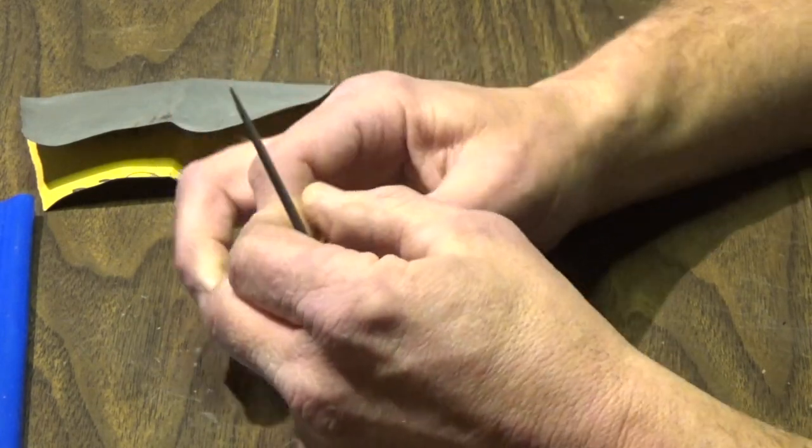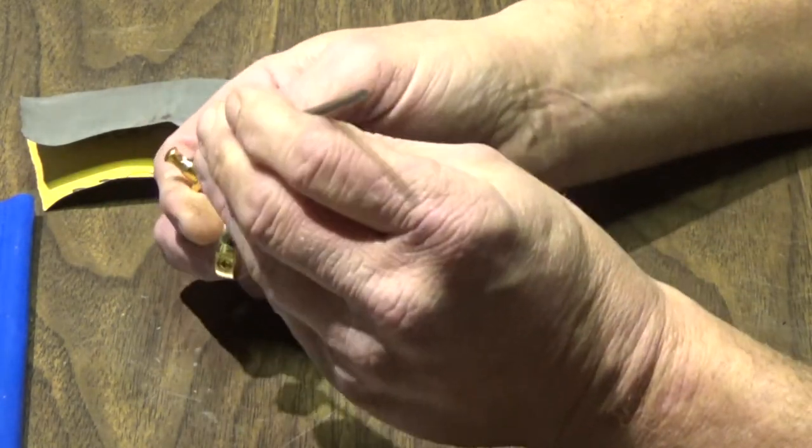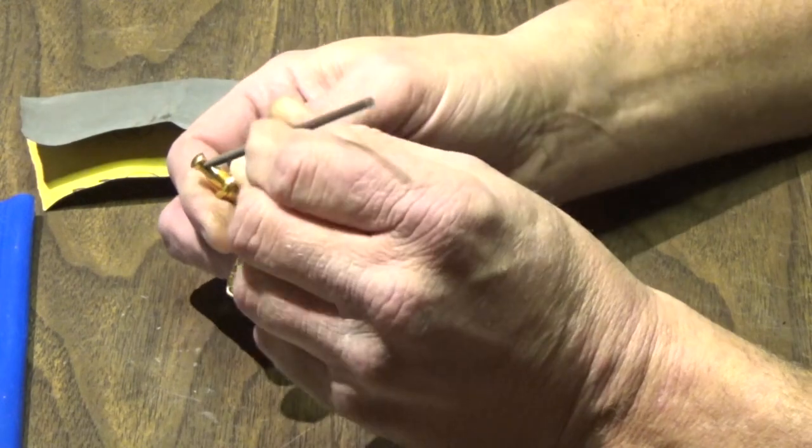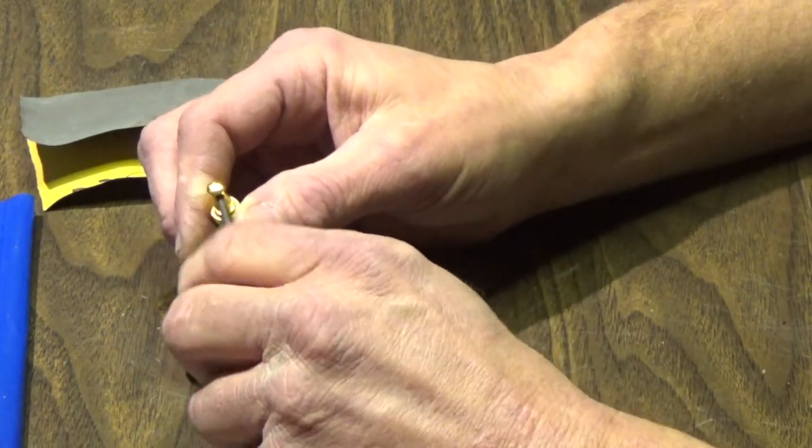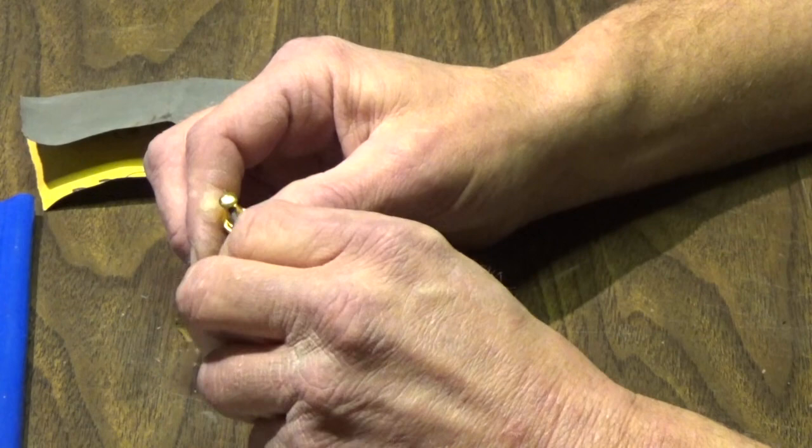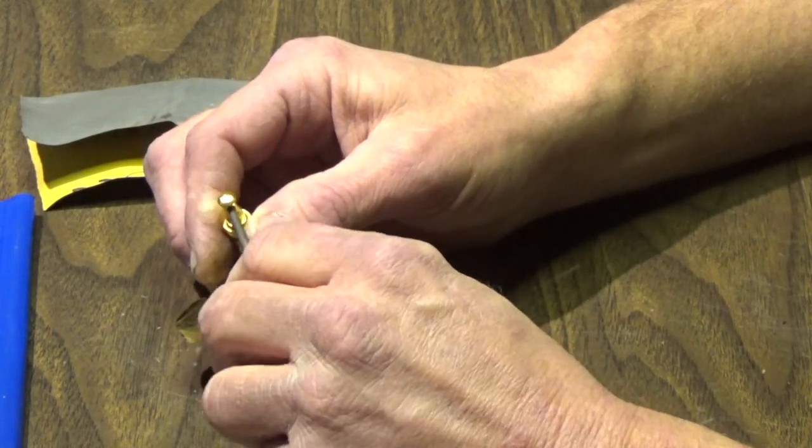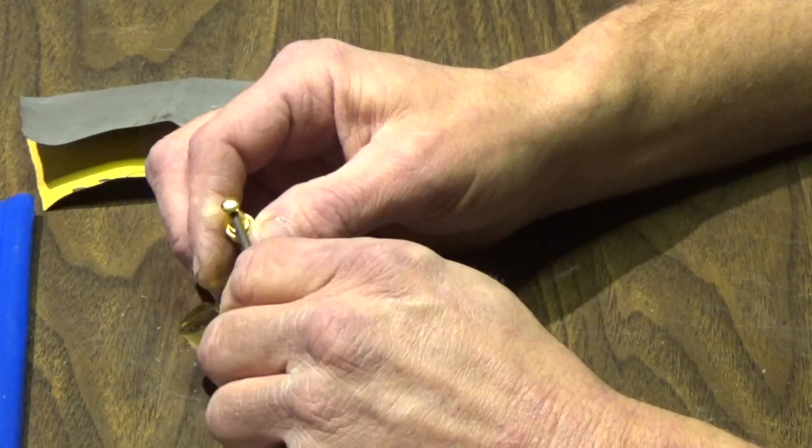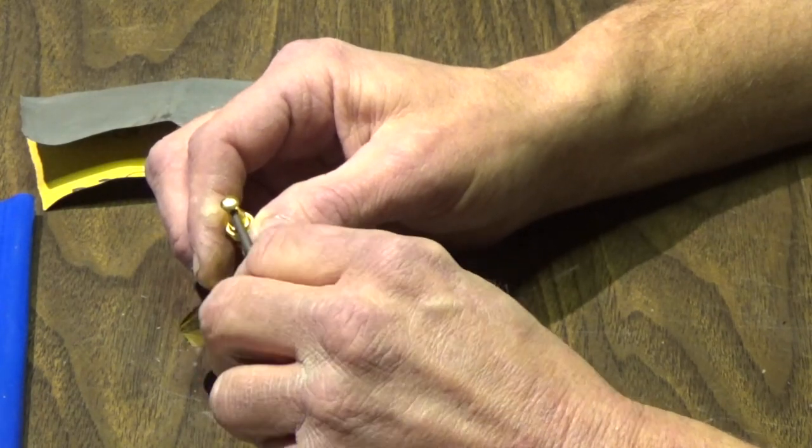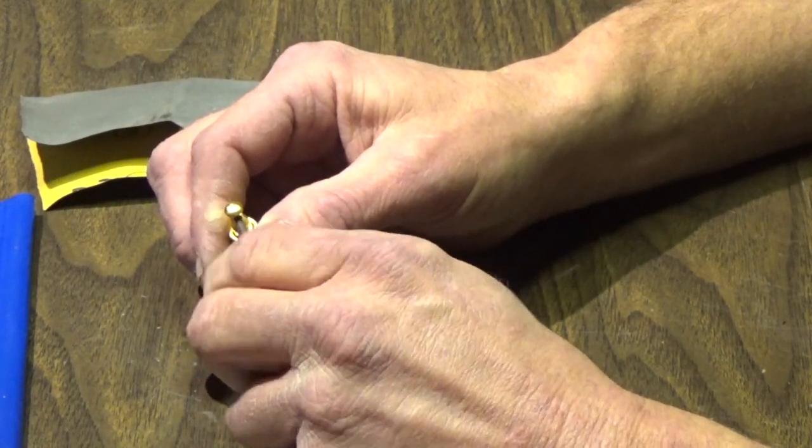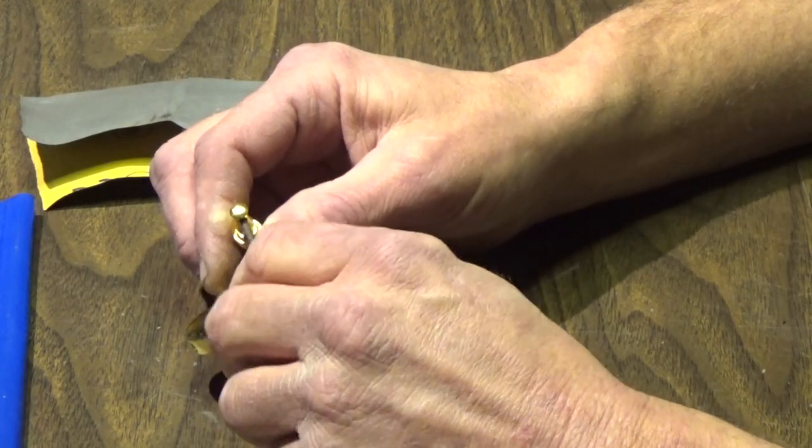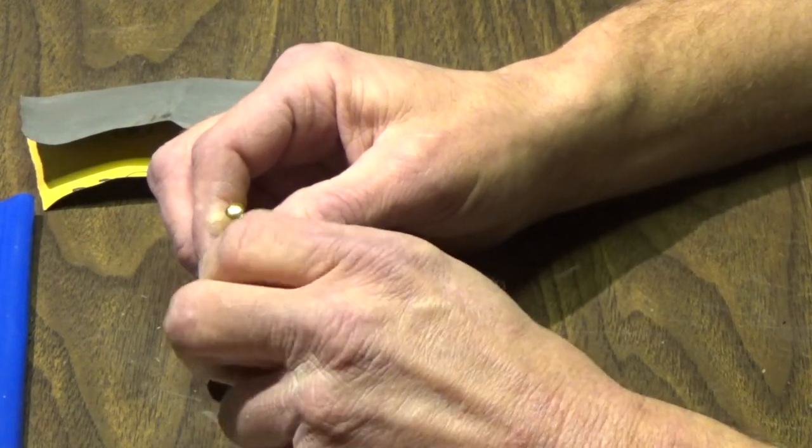I actually had this problem on a brand new set of Grovers on my Les Paul, and I was like why is my E string breaking on me? It actually happened to me too, and then I thought well none of the other strings are doing it, just my high E. So that's where that tuning peg ended up.